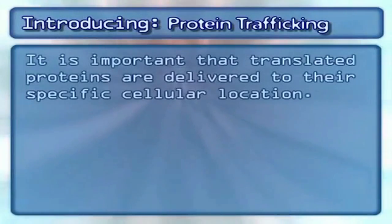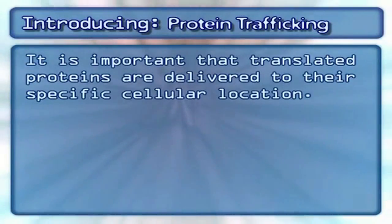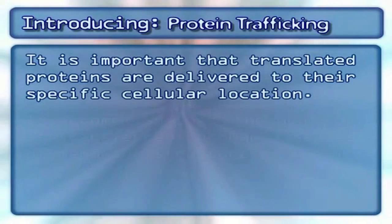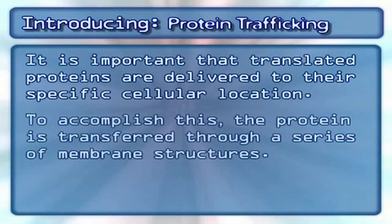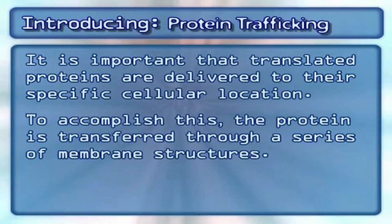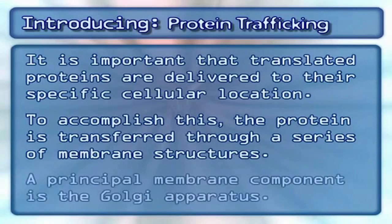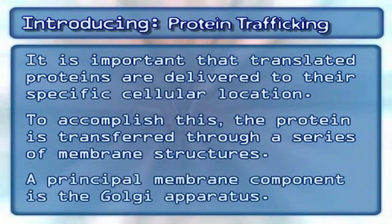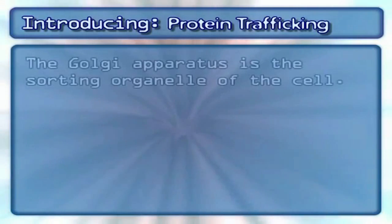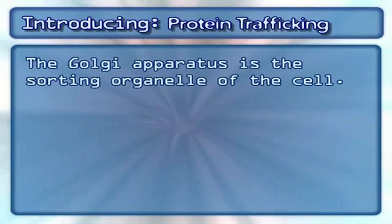It is important that translated proteins are delivered to their specific cellular location. To accomplish this, the protein is transferred through a series of membrane structures. A principal membrane component is the Golgi apparatus, which is the sorting organelle of the cell.